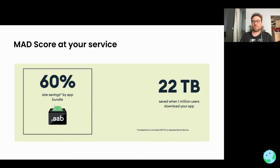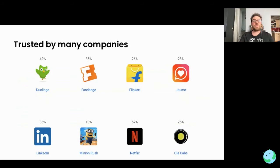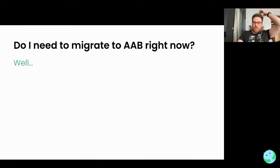For a medium-sized app, this saves around 22 terabytes of data across users — that's quite huge. It's also trusted by many other companies: Duolingo, LinkedIn, Netflix are all using Android App Bundle. It saves a lot of storage on the user's side and reduces downloading time, so it's a real benefit.